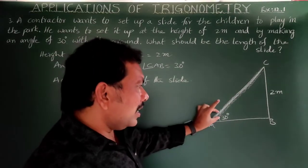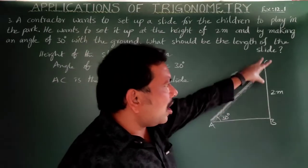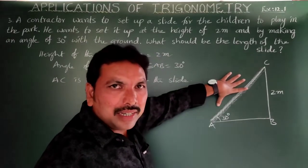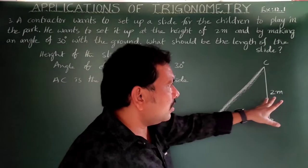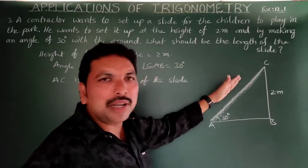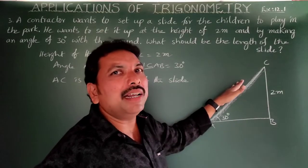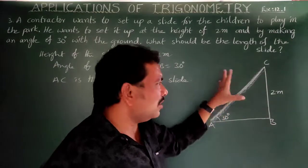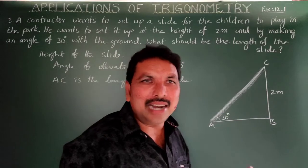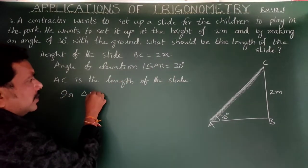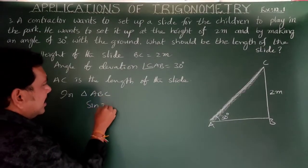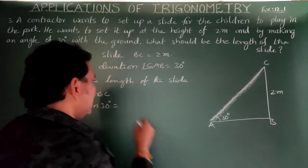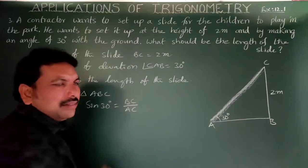For 30 degrees, BC is the opposite side, AB is the adjacent side, and AC is the hypotenuse. To find the hypotenuse using the opposite side, the appropriate trigonometric ratio is sin θ. In triangle ABC, sin 30° = BC/AC.